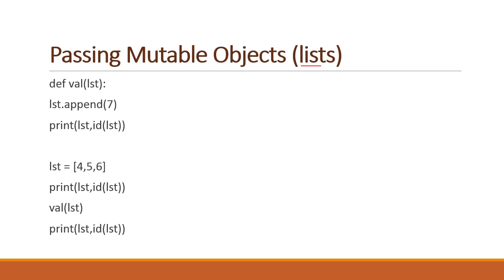Let's see. You have passed list to the function. You appended value 7 into the list, and then you printed the list and the list's id, which shows its memory location. The list initially had values 4, 5, 6.